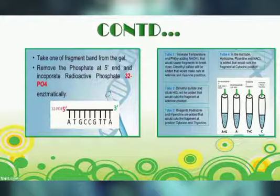This strong guanine, weak adenine pattern contains almost half the information necessary for sequencing. Next is Adenine-Enhanced Cleavage: the glycosidic bond of methylated adenosine is less stable than that of methylated guanosine. Thus, gentle treatment with dilute acid releases adenines preferentially. Subsequent cleavage with alkali then produces a pattern of dark bands corresponding to adenines with light bands at guanine.